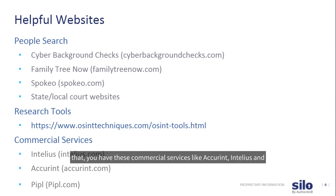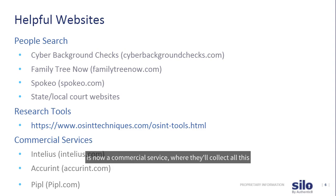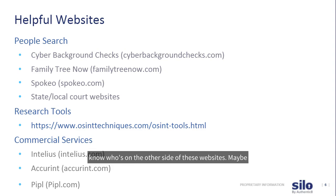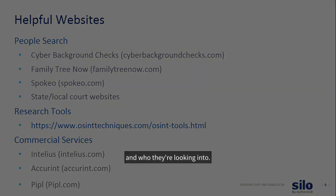On top of that, you have commercial services like Accurint, Intellius, and Pitbull.com — which used to be a free tool but is now a commercial service — where they collect all this information and give you that one-stop shop. But as you'll see, a lot of these websites may not be trusted. You might not know who's on the other side, and maybe they created these tools to collect information on law enforcement who they're looking into.